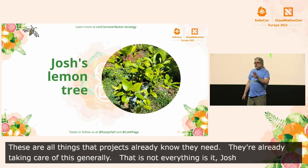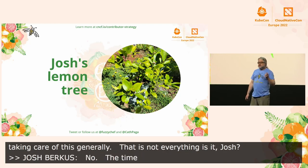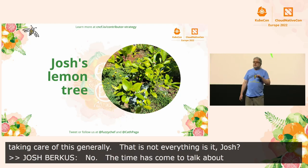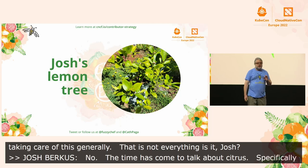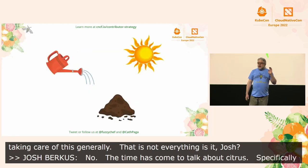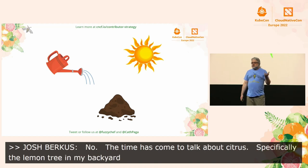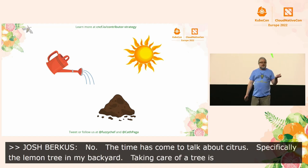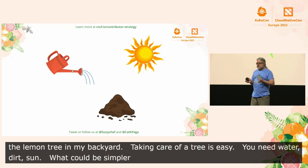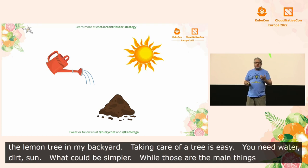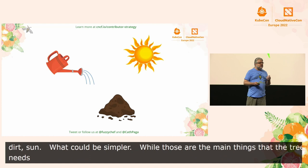Since we're in Valencia, the time has come to talk about citrus — specifically, the potted Meyer lemon tree in my backyard in Portland, Oregon. Taking care of a tree is easy, right? You need water, you need dirt, you need sun. What could be simpler? And while those are the main things a tree needs, they're not the only things. And I almost killed my lemon tree finding that out.